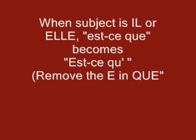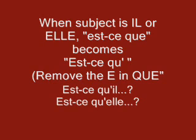If the subject is il or elle, you will have to remove the e of que in est-ce que. So it will sound est-ce qu'il ne mange pas or est-ce qu'elle ne mange pas, instead of est-ce que il or est-ce que elle. You make the liaison, the connection between those two words. Two vowels together in contact in French usually don't work, so one of them has to disappear. In this case, the e of que disappears and you add an apostrophe: est-ce qu'il, est-ce qu'elle. This happens whenever the subject begins with a vowel.